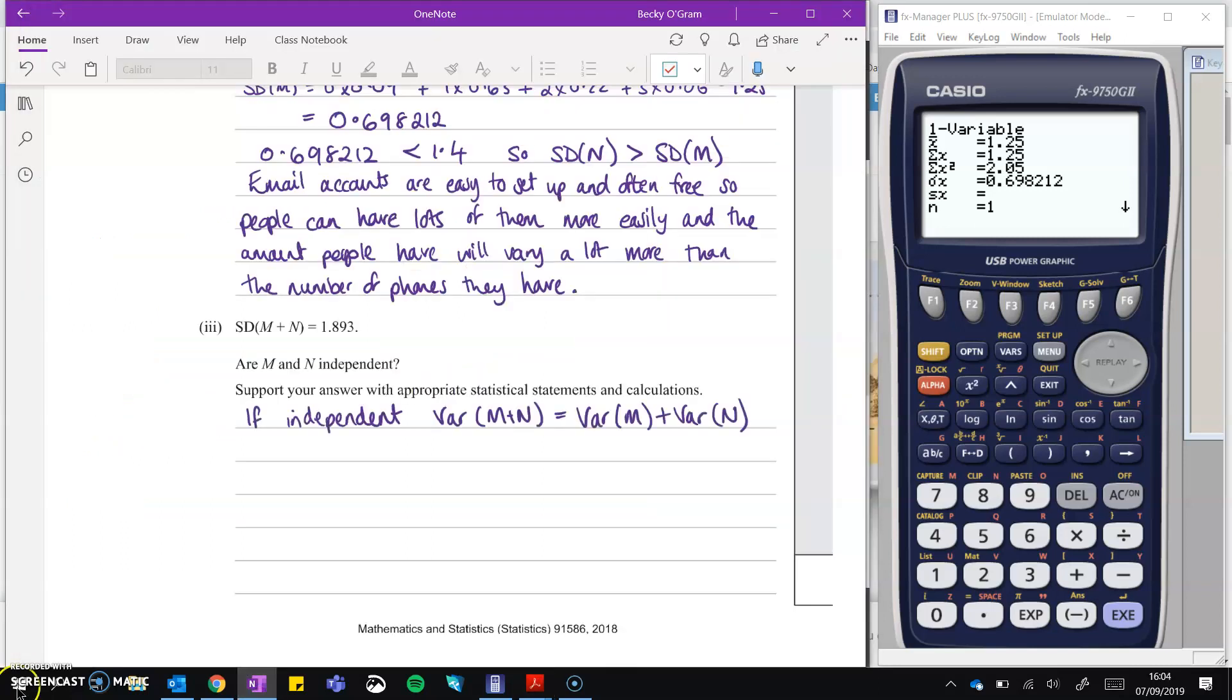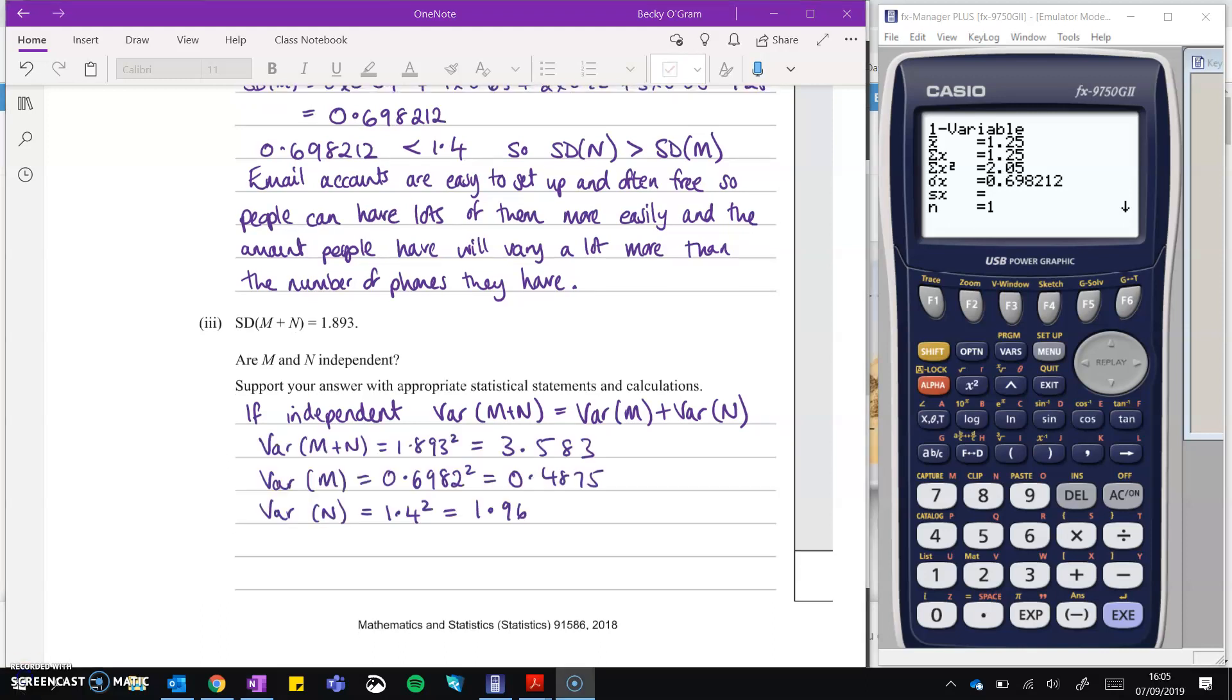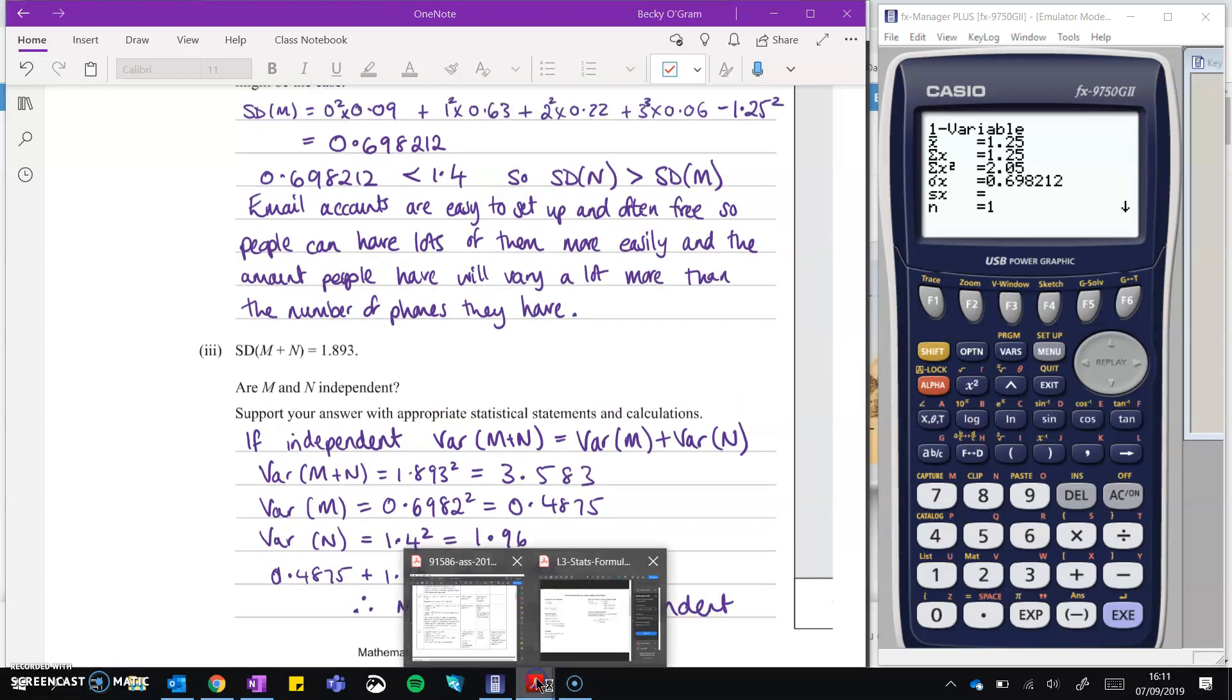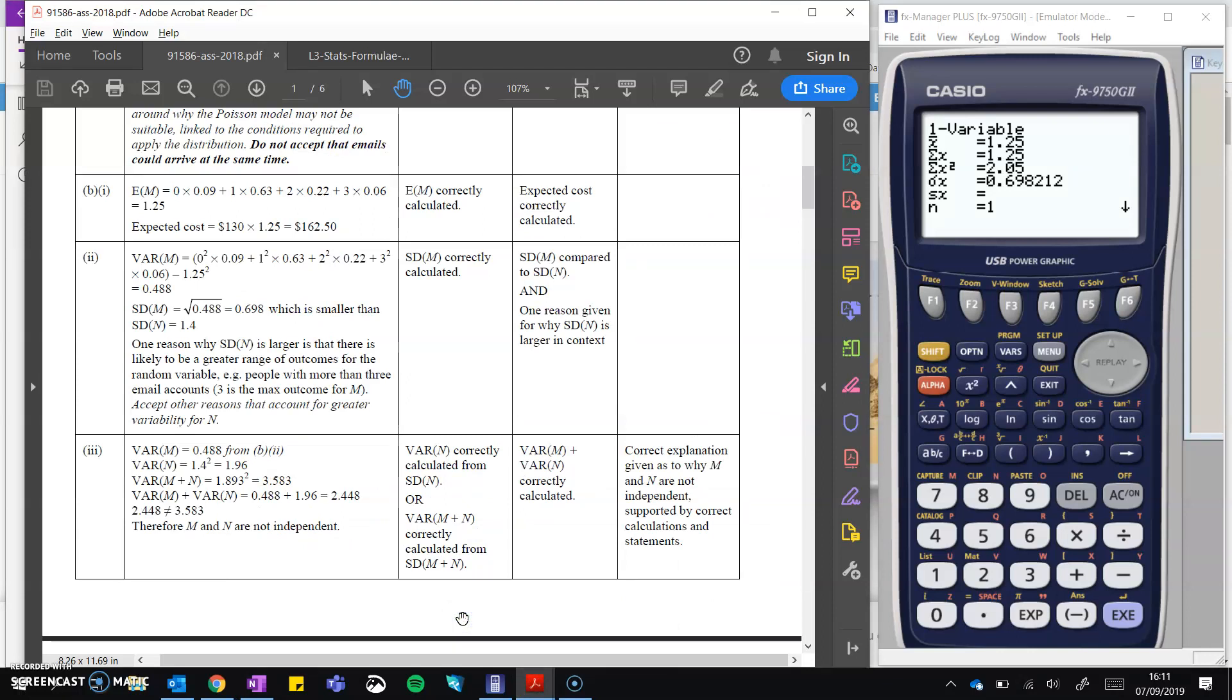Okay, so using that formula, if they're independent, the variance of M plus N will be equal to the variance of M plus the variance of N. So we just need to work out each of those parts. We get those variances by squaring each of the standard deviations. And now we will check. The variance of M is 0.4875. If we add it to 1.96, that does not add up to the 3.583. Therefore, M and N are not independent. So we'll take a look at the marking schedule. And there's all of those calculations that we were doing. You get the U mark for correctly turning a standard deviation into a variance. Adding together the variances of M and N to compare them with the variance of M plus N. And then correctly explain why they are not independent.